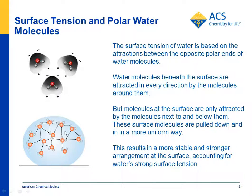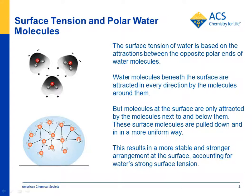One explanation is that the water molecules beneath the surface are being pulled in all directions — up, down, sideways, every which way. But the molecules at the surface are only being pulled down and toward each other. This creates a more uniform collection of water molecules that creates a stronger layer at the surface.